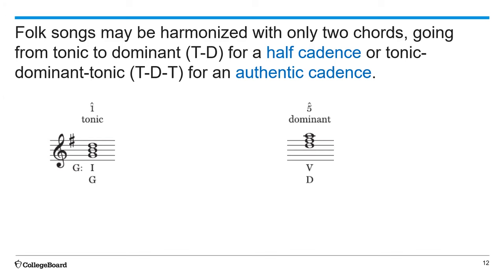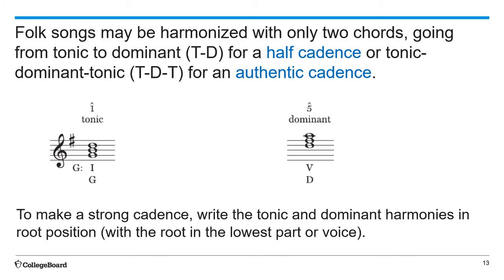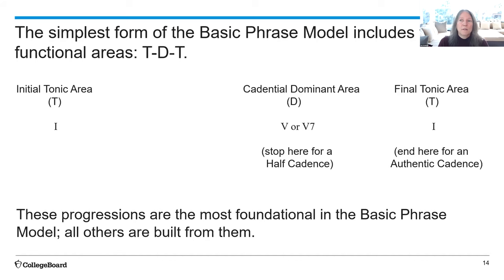Folk songs can be harmonized with only two chords going from tonic to dominant — T-D — for a half cadence, or tonic-dominant-tonic for an authentic cadence. To make a strong cadence, you will learn to write the tonic and dominant harmonies in root position, with the root in the lowest part or the lowest voice. The simplest form of the basic phrase model includes three functional areas: the initial tonic area, represented by a tonic chord; the cadential dominant area (D), represented by V or V7; and you can stop there for a half cadence, or continue to the final tonic area for an authentic cadence.